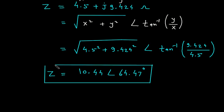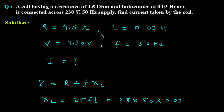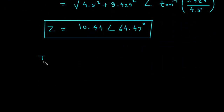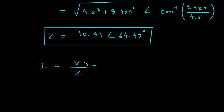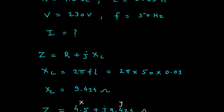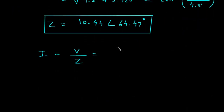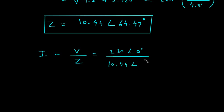We need to find the current I. Using Ohm's law for AC circuits, I = V / Z. The voltage is 230 volts at an angle of 0 degrees (since no angle is given), and Z = 10.44 ∠ 64.47°. So I = (230 ∠ 0°) / (10.44 ∠ 64.47°).